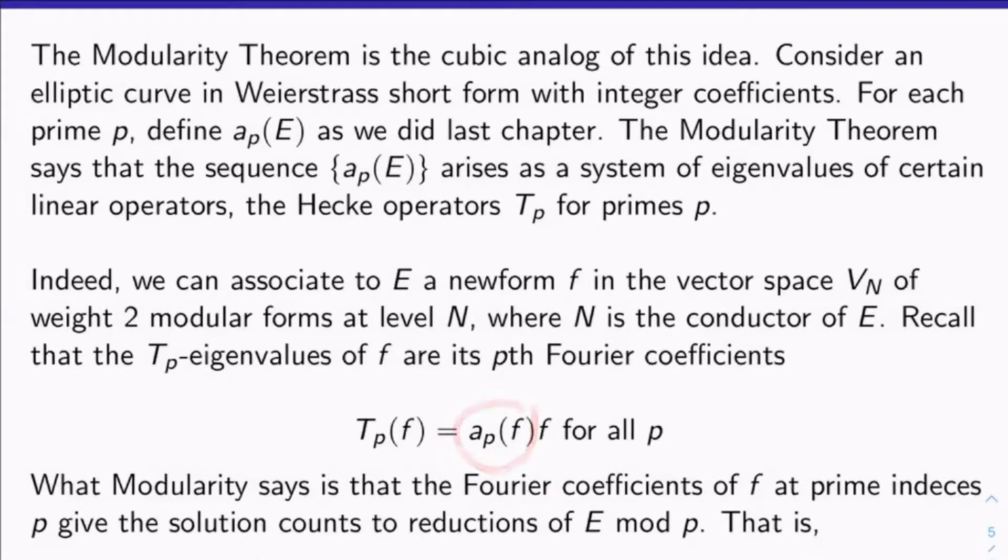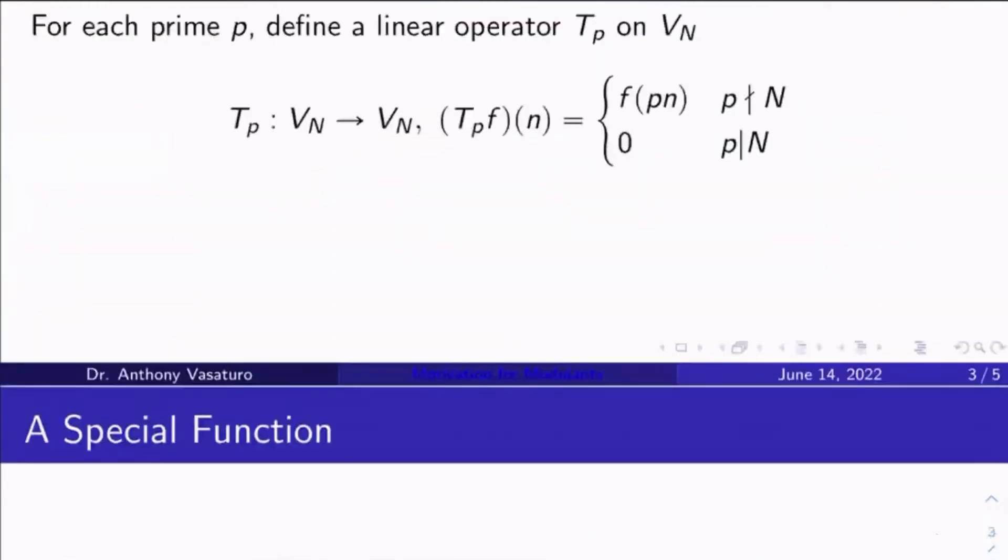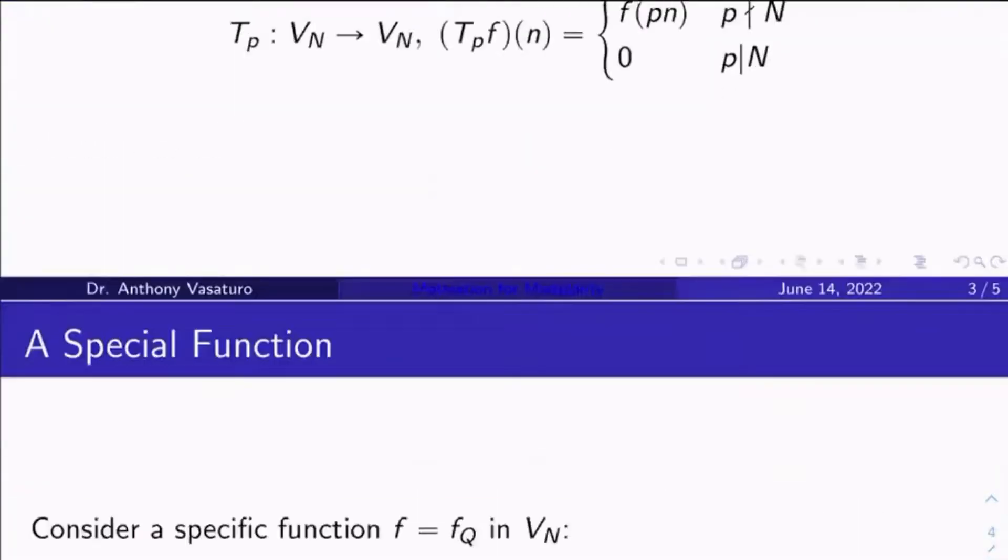Modularity is saying the Fourier coefficients of f at prime indices, these a_p(f)s, they give essentially the solution counts to reductions of E mod p for all primes p. In other words, a_p(f) is a_p(E) for all p. This is what modularity says. And so we find that the a_p(E)s are Hecke eigenvalues for the operators T_p for all primes p.